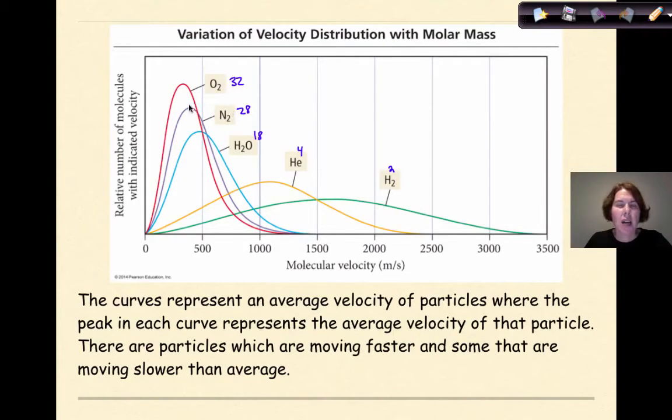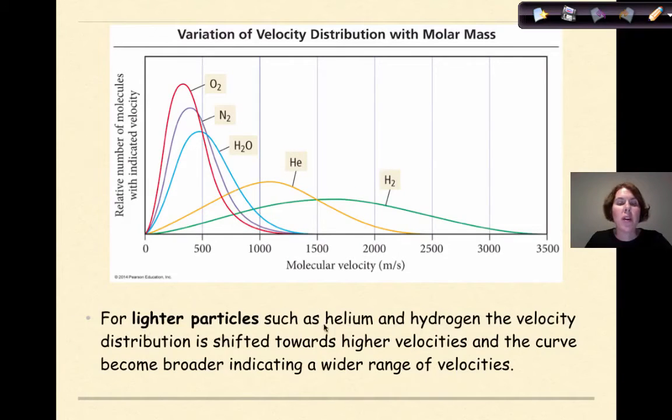So our oxygen molecules are obviously going to be moving slower. If we look down at molecular velocity, they are down towards the lower end, while our particles that are lighter will be distributed across and at the peak. If we look at hydrogen, the peak is right here. They're on average going to have a much higher velocity. So for lighter particles, such as helium and hydrogen, the velocity distribution is shifted towards higher velocities and the curve becomes broader, indicating a wider range of velocities. That means, on average, even though they have higher velocities, some velocities of hydrogen molecules are even higher and some are lower. Same thing with the helium. The average velocity would be around here, but some of those particles have a higher velocity, or lower, depending on individual particles.